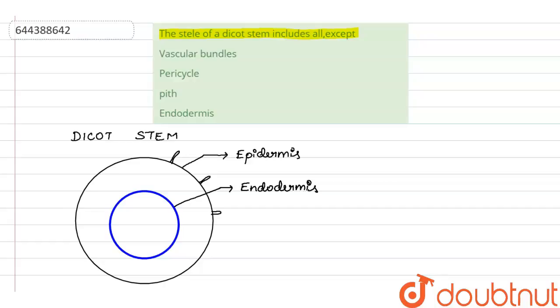Inside the endodermis we have a layer of cells known as the pericycle. The gap between epidermis and endodermis is known as the cortex.